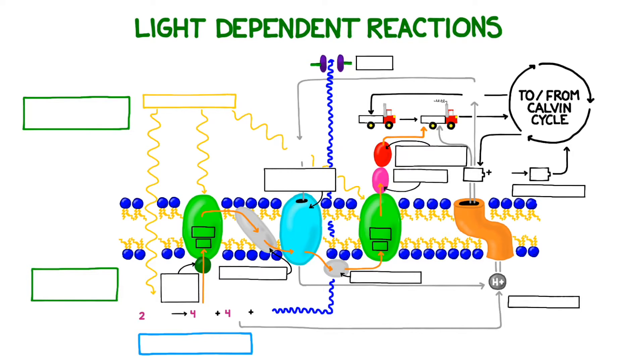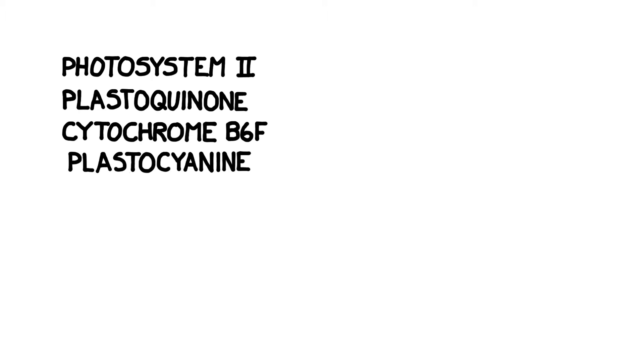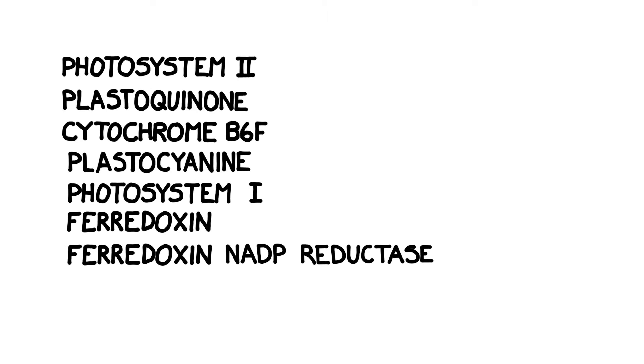The major proteins we'll be discussing are as follows: Photosystem II, Plastoquinone, Cytochrome B6F, Plastocyanin, Photosystem I, Ferrodoxin, Ferrodoxin NADP reductase, and finally, ATP synthase. That's a lot of proteins, but don't worry, we'll work through them in a somewhat manageable way.